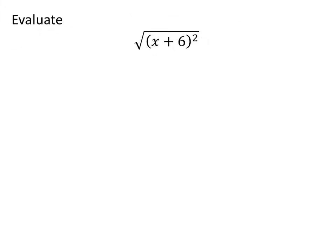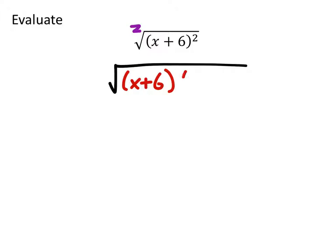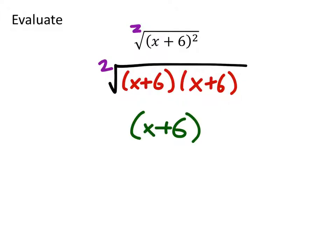Square roots are the inverse operations for exponents. This one has an indice of 2, so the square root of (x+6) squared means: what number multiplied by itself gives (x+6) squared? That would be x+6. Another way to look at it is the exponent 2 and the indice 2 cancel each other out, leaving just x+6. Either way you look at it, you get the same answer.